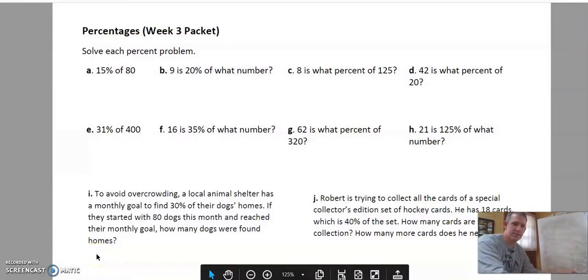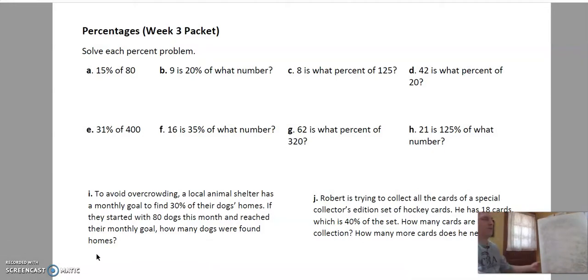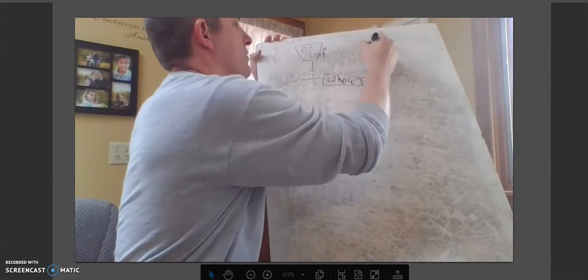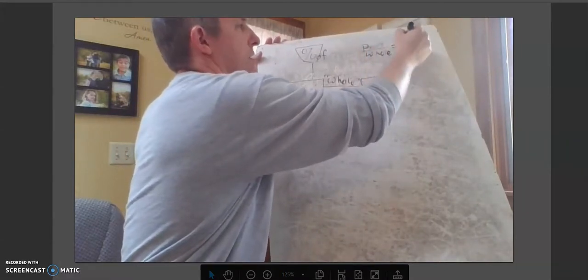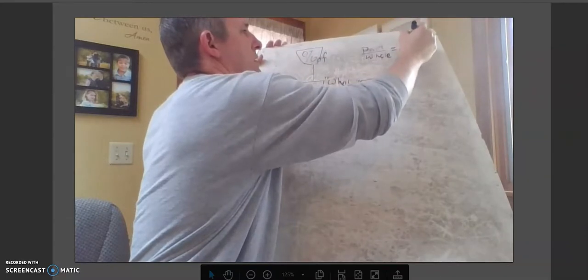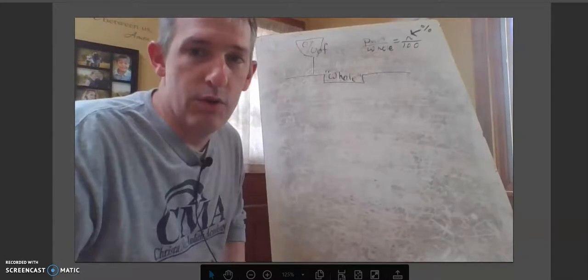First off we've got percentages. This is where we need to figure out are we talking about the part, percent, or the whole? And the way we find out is the percent of is a warning sign that tells us that the whole is coming. Anytime you see the words percent of you know that the whole is the very next thing. If it's a number, we know the whole. If it's not and it's an unknown thing, we don't know the whole and that's what we need to find.